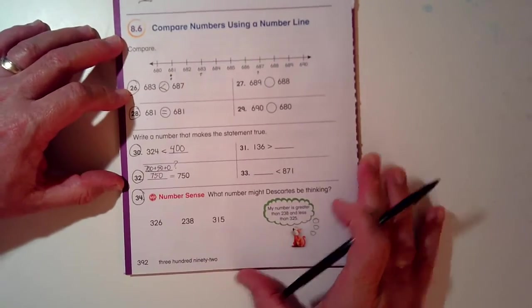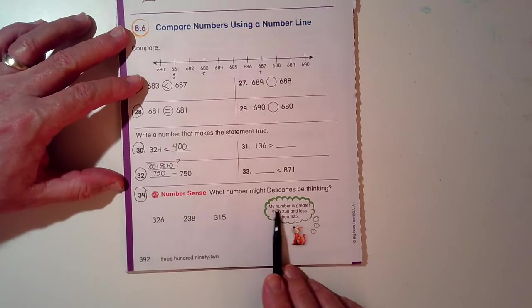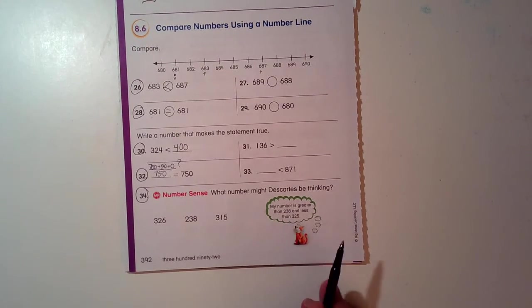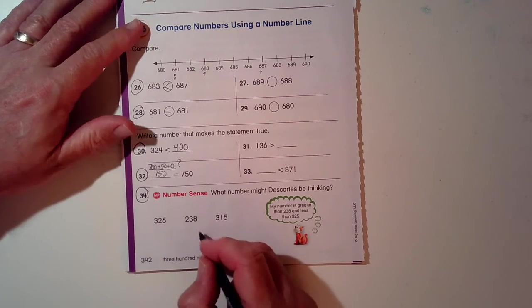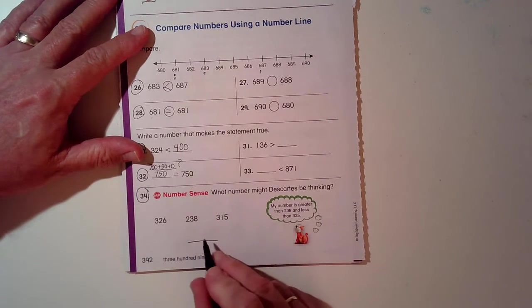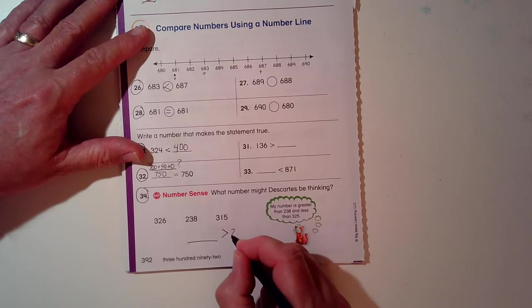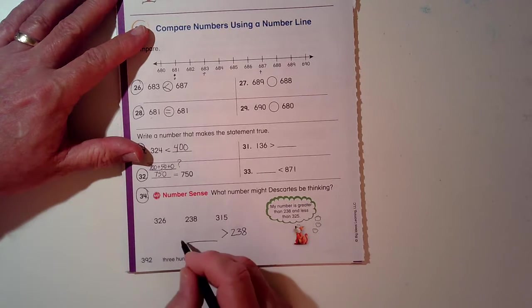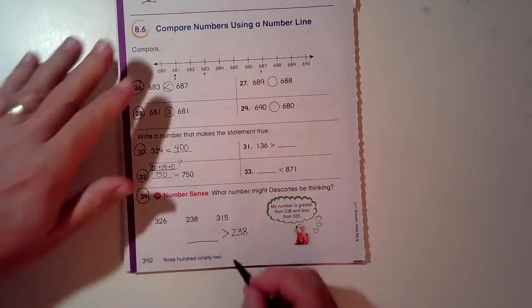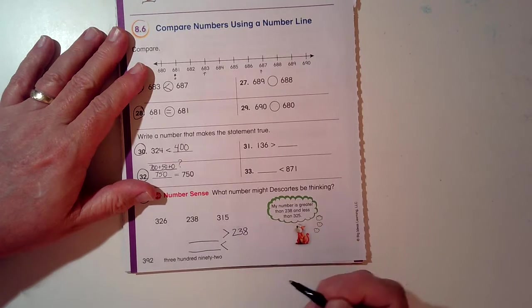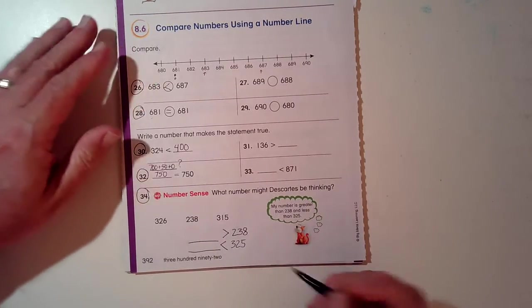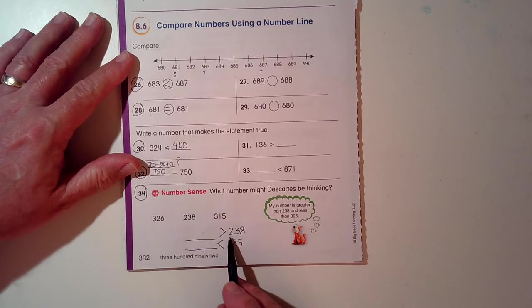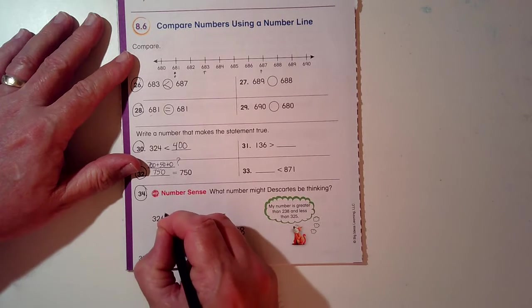And 34. What problem, or what number, might Descartes be thinking? My number is, here's our clue. My number is greater than 238 and less than 325. So my number, so here is his number. My number is greater than 238. Let's see which number fits in both of those spots. 300 is greater than 200, so that could work on the first problem.